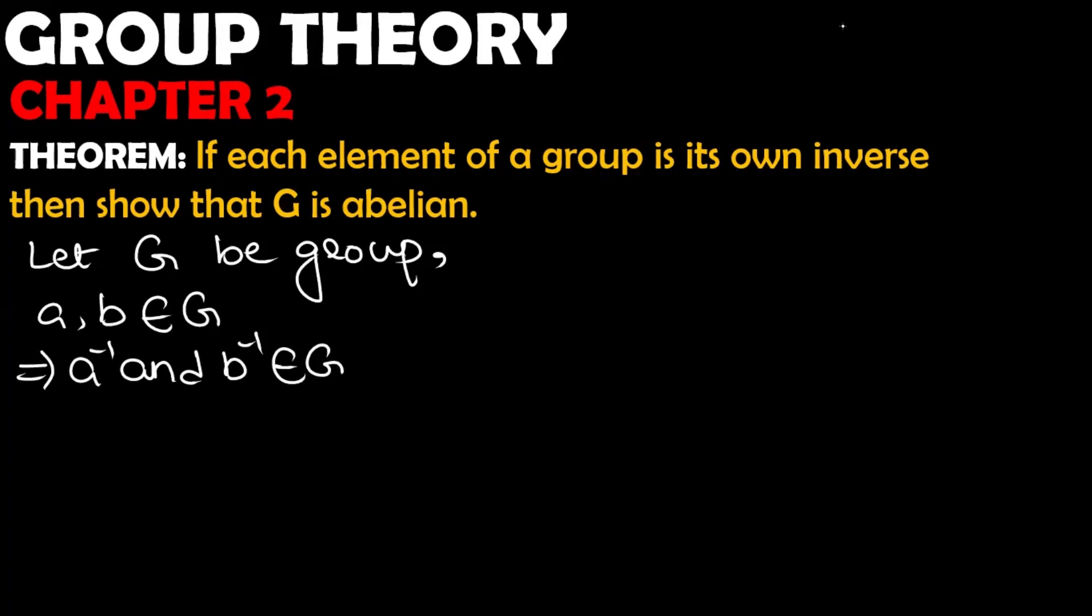A's inverse and B's inverse belong to G. And we have given A is equal to A inverse. We have given B is equal to B inverse. This is our information. Now, what will we do? How will we do it?